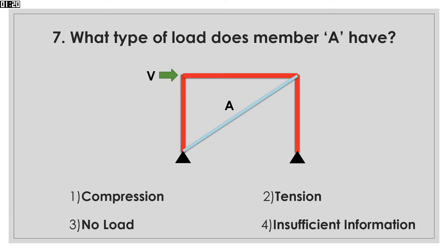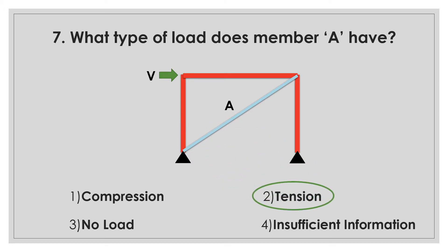What type of load does member A have? This is a simple frame with a lateral load and a diagonal brace. As you can imagine, the applied load will push the frame to the right and hence put member A in tension.